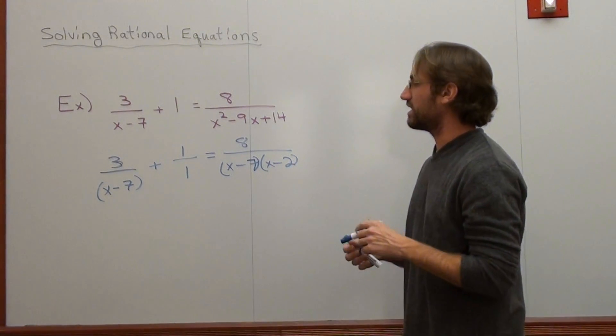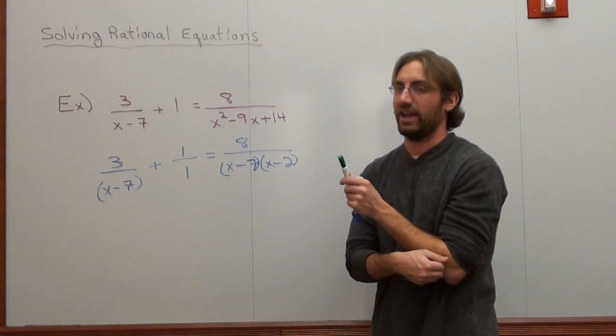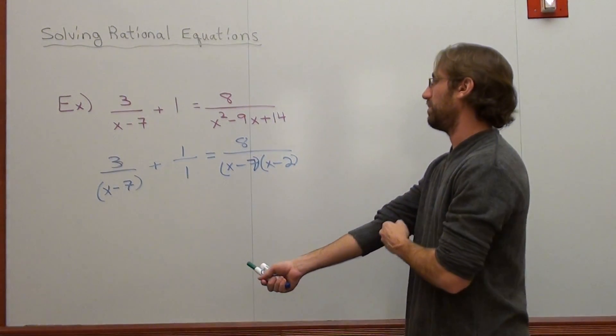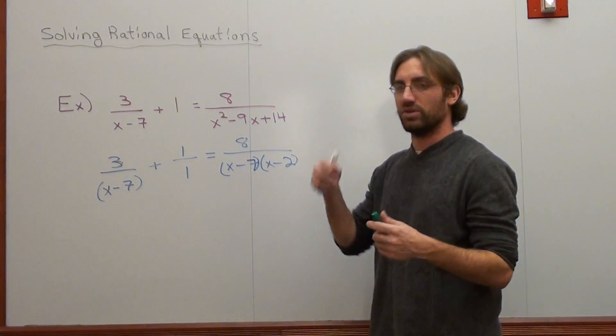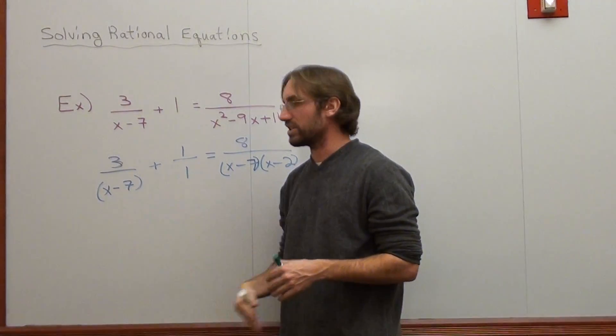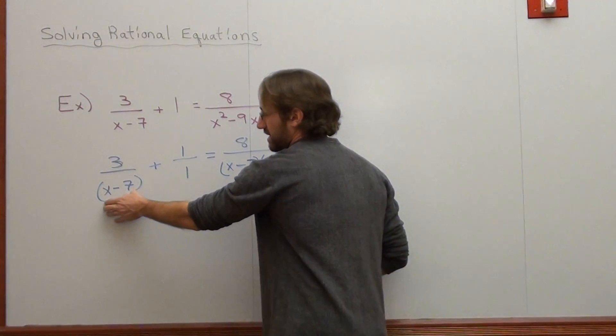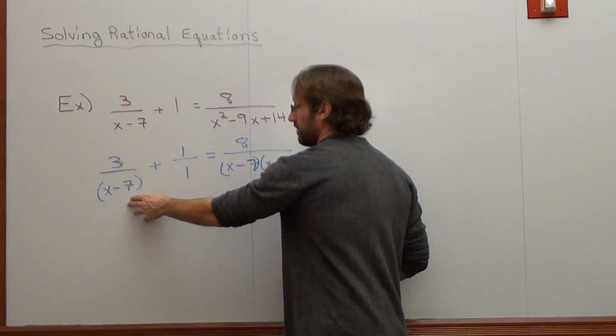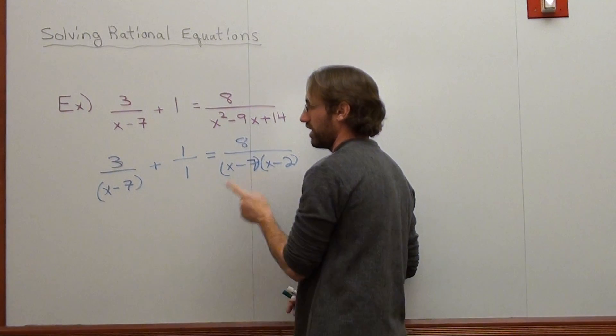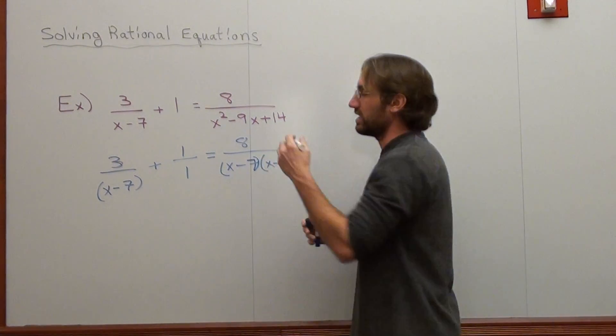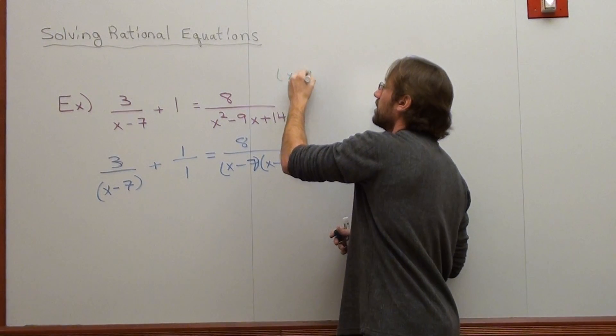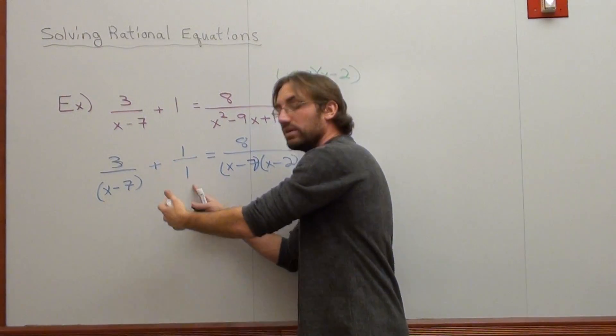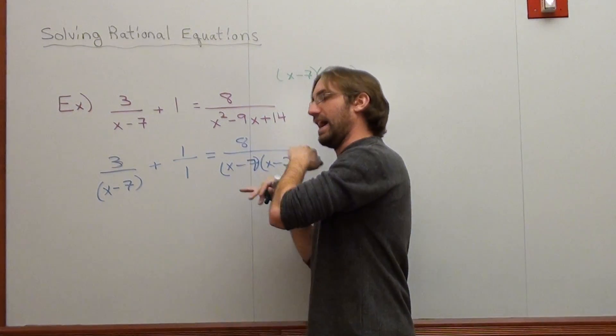Now, if I could get rid of these denominators, this would be fantastic, and I can. And basically what I'm going to do is I'm going to multiply by the LCD or the LCM of this problem. And basically what you have to do is look at all the denominators and see what any of them is missing. So this one has an x minus 7. It doesn't have a 1. That's arbitrary. It doesn't need it. But it doesn't have an x minus 2. So I know that in order to figure out what my LCD is, I know it needs an x minus 7, and I know it needs an x subtracted 2. This needs both of them. This doesn't need anything. It's got everything.